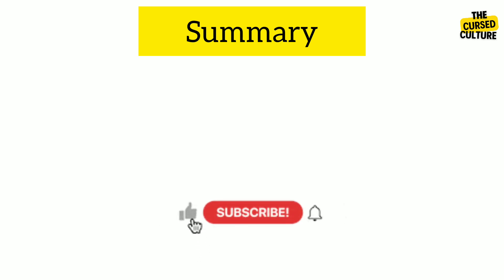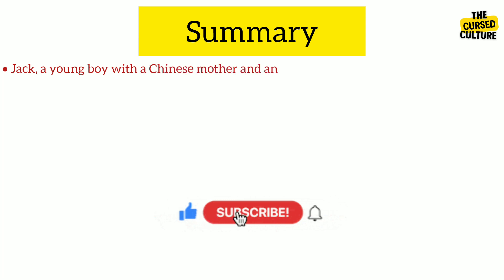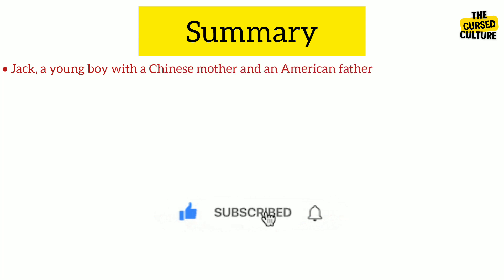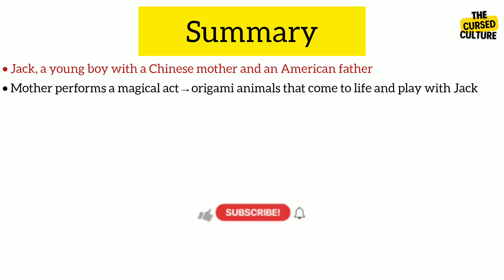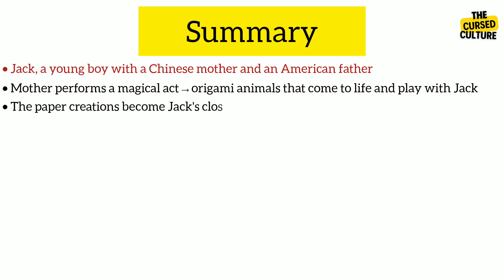The story follows the life of Jack, a young boy with a Chinese mother and an American father. His mother is the only person in his life who can perform a magical act in which she creates origami animals that come to life and interact with Jack. These paper creations become Jack's closest friends and playmates.